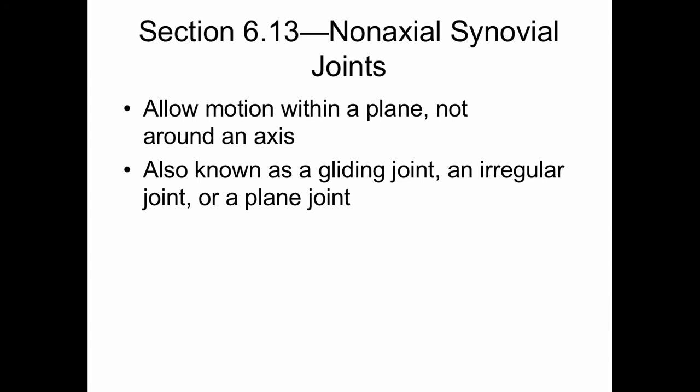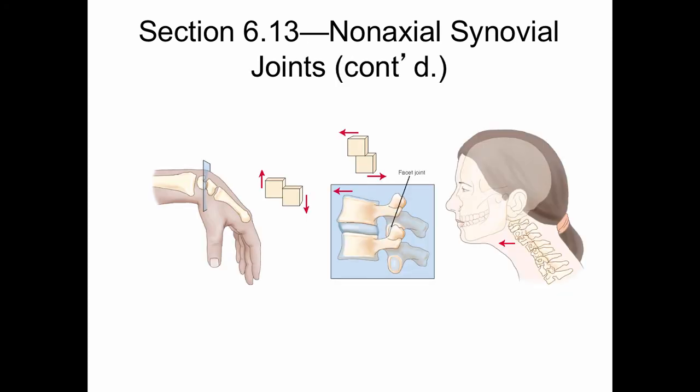Non-axial synovial joints allow motion within a plane, not around an axis. They are also known as gliding joints or plane joints, because the surface of one bone translates or glides along the surface of its neighbor. Examples include the joint between two carpal bones and a facet joint between the cervical vertebrae.